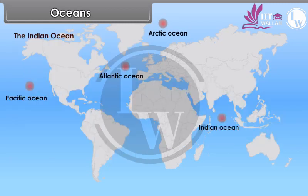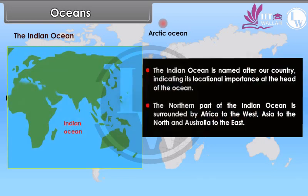The Indian Ocean is named after our country, indicating its locational importance at the head of the ocean. The northern part of the Indian Ocean is surrounded by Africa to the west, Asia to the north, and Australia to the east.